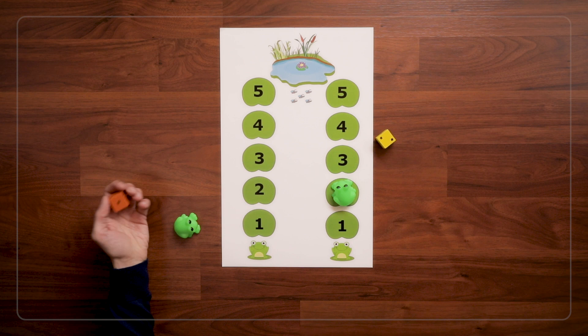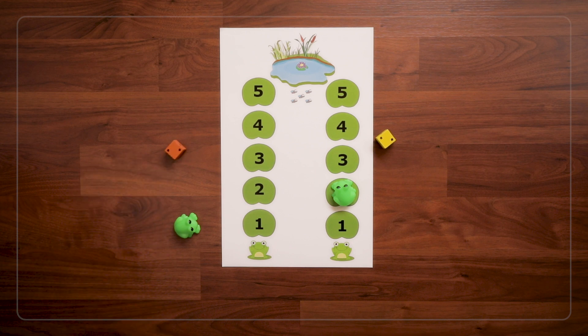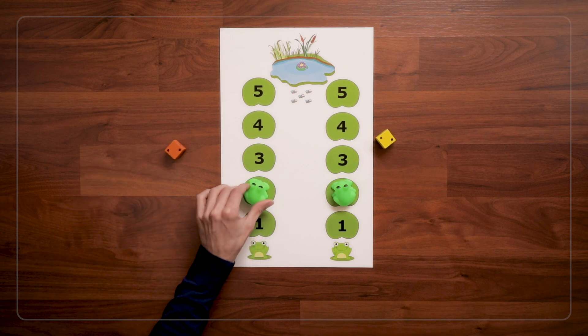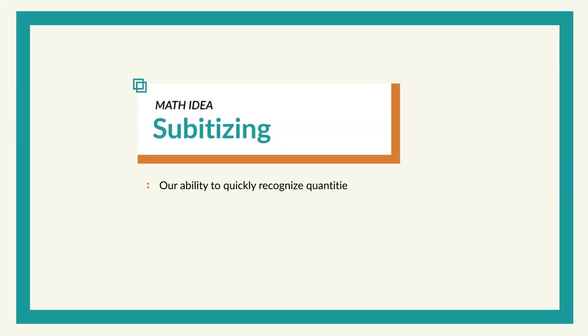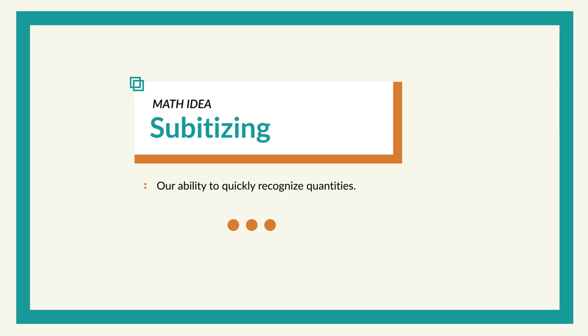Then it's my partner's turn. They roll, and they get a 2. And get to jump 1, 2. When kids roll the die and recognize the number of dots they rolled, they are practicing a skill called subitizing. Subitizing is our ability to quickly recognize quantities. And kids get lots of practice subitizing in this game because when they roll, they really want to know immediately what number they got so they can move their frog.